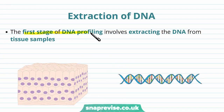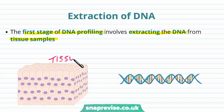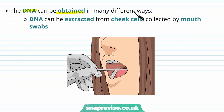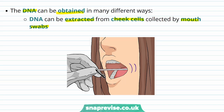The first stage of DNA profiling involves extracting the DNA from the tissue samples of the individual. From the tissues we obviously have cells, and the cells contain the genome of that individual. The DNA can be obtained in a variety of different ways. It can be extracted from cheek cells collected by a mouth swab — the mouth swab has a cotton wool ball on the end, and as it rubs against the cheek it removes some cells, which can then be taken and analysed.